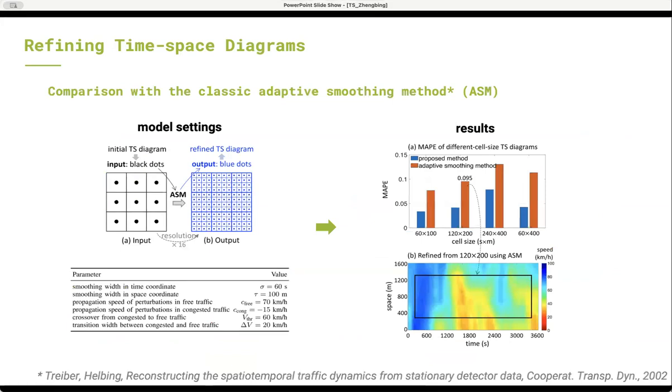It is curious to know if traditional traffic state estimation methods are competent in refining time-space diagram, although a comparative method that was proposed directly for the refinement problem might not be found at present. To this end, we select the classic adaptive smoothing model to make a comparison. It can be seen that the MAPE results from the proposed refinement method are much smaller than those from the ASM.